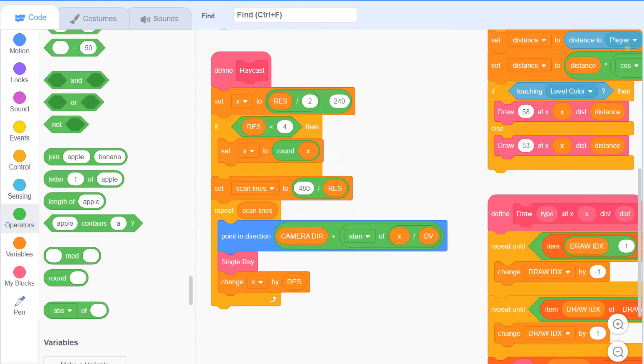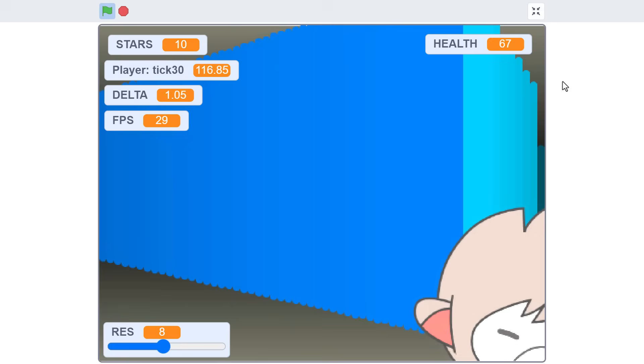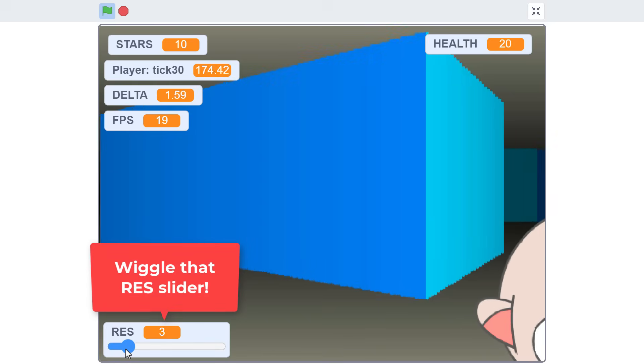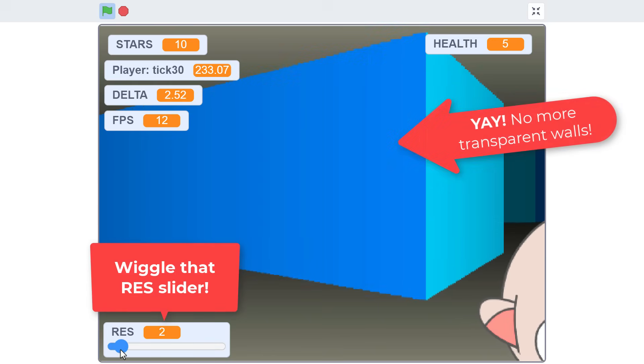So, simple. If we test that now, I'll get some enemies behind this wall, and wriggle that res slider. Yes, solid as a solid thing. Smashing.